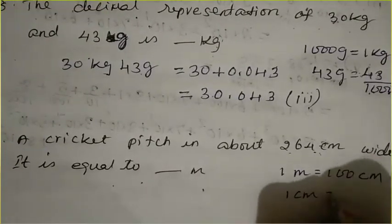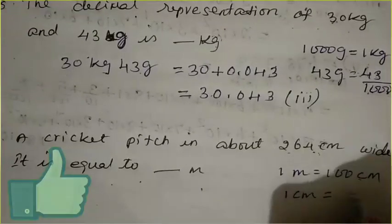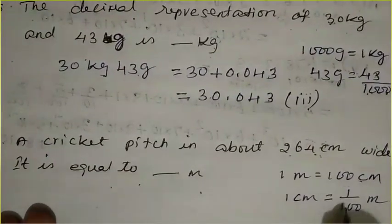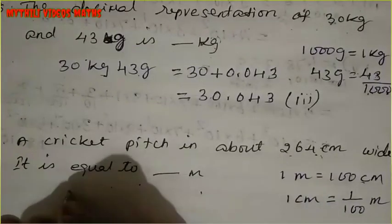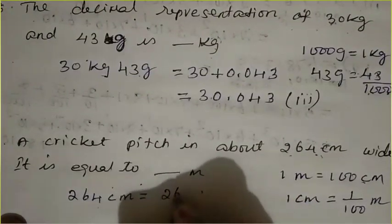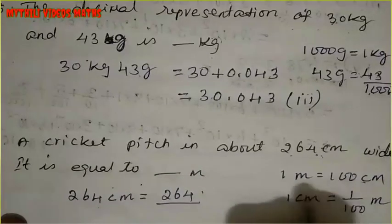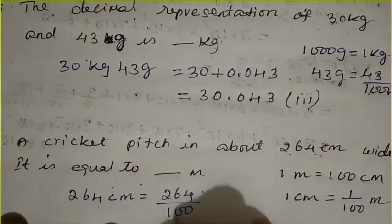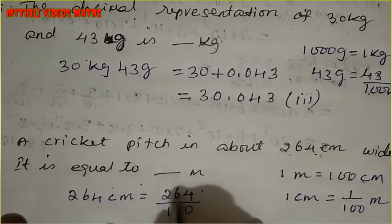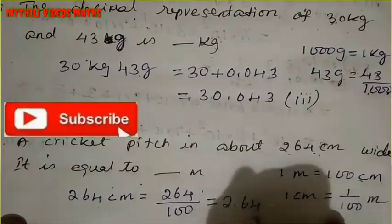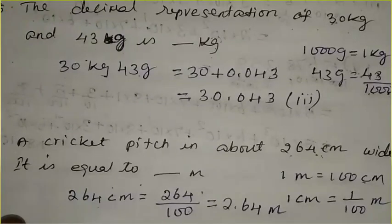1 cm is equal to 1/100 meter. So 2.64 cm divided by 100 — we move the decimal point 2 places, giving 2 zeros. That is equal to 0.0264 meter.